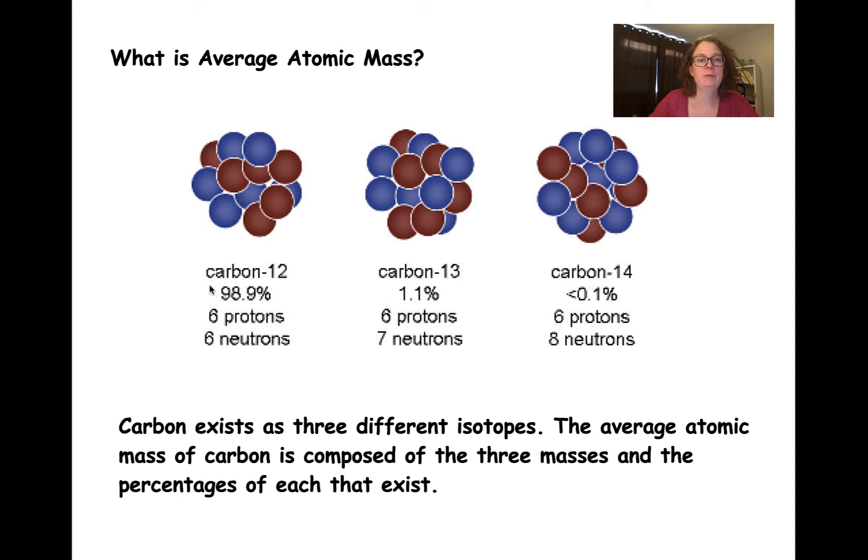So we have carbon-12, carbon-13, and carbon-14. Carbon-12 has six protons and six neutrons. Carbon-13 has seven neutrons, and carbon-14 has eight neutrons.